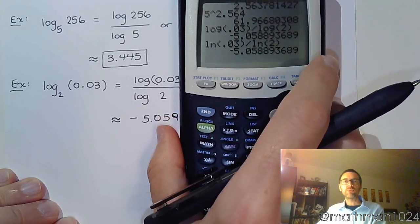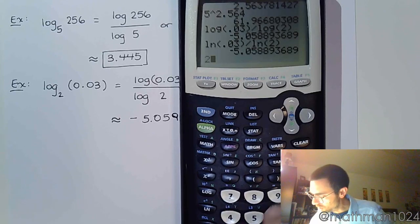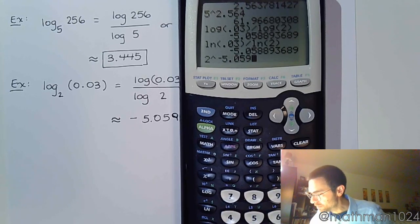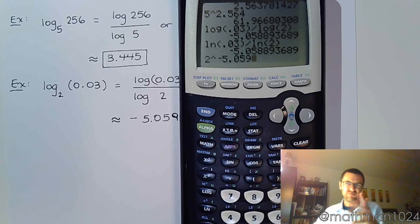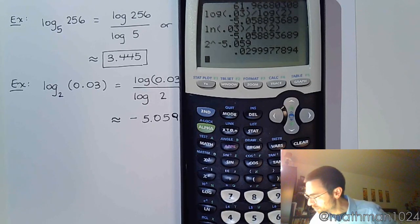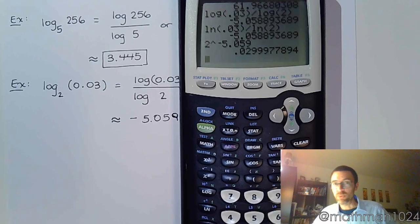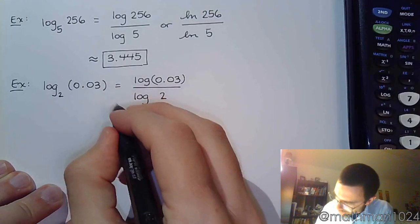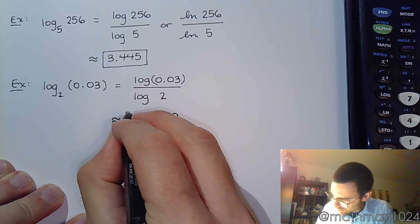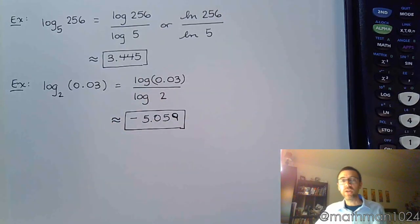And like we were talking before, check your work. If I do 2 raised to the negative 5.059, I should get something that's close enough to 0.03. Yeah, it's really close to 0.03. So I feel really good about my work.